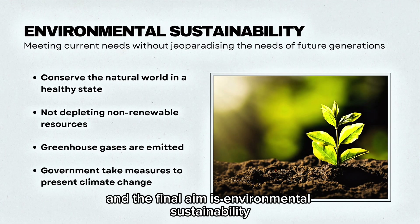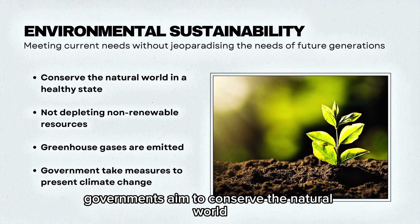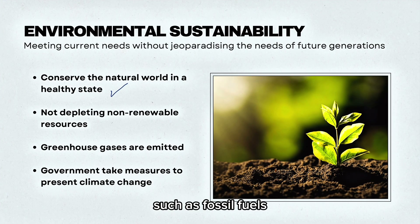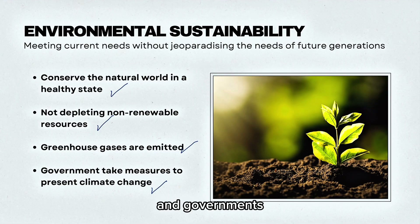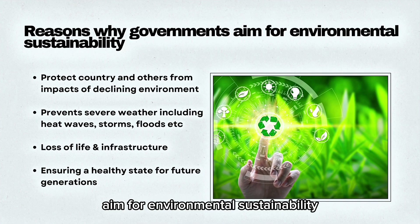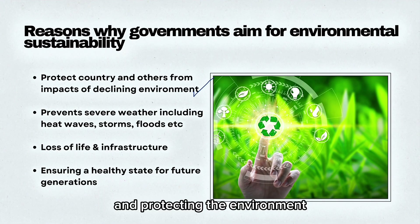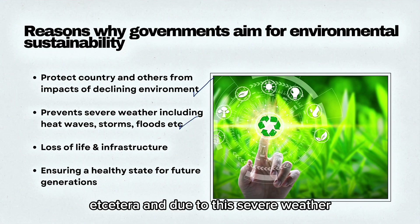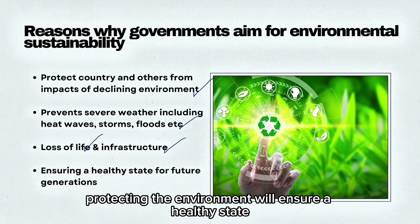The final aim is environmental sustainability — to meet current needs without jeopardizing the needs of future generations. Governments aim to conserve the natural world in a healthy state by not depleting non-renewable resources such as fossil fuels, and by taking measures to prevent climate change as greenhouse gases are emitted. Governments usually do this by setting rules and regulations for private firms to follow. The reasons why governments aim for environmental sustainability is to protect the country and others from impacts of a declining environment, including severe weather changes such as heat waves, storms, and floods, which cause loss of life and infrastructure, and to ensure a healthy state for future generations to come.